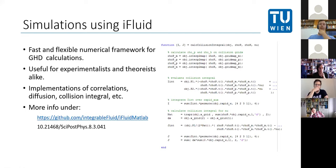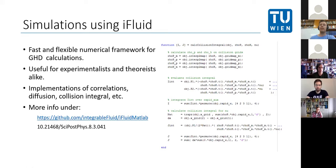A quick plug for iFluid, the numerical framework used to carry out all these simulations. It is essentially a platform on which you can build GHD applications: it handles all the nasty index work and implements all the basic GHD functions, so you can add whatever extension you want on top. As a demonstration, the function used to calculate the collision integral is just a couple of lines of code. It's not just for experimentalists — theorists who want to code an application quickly may also find it worthwhile.